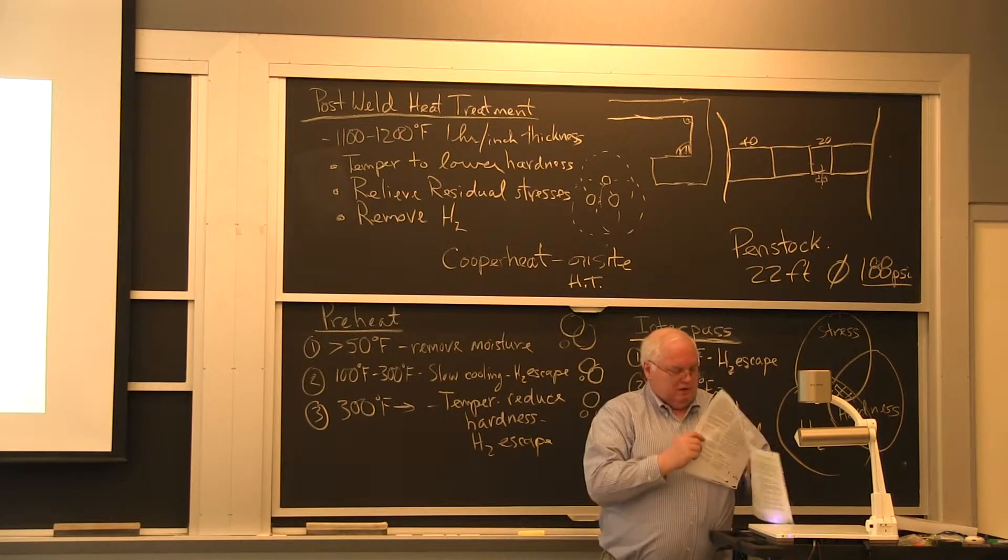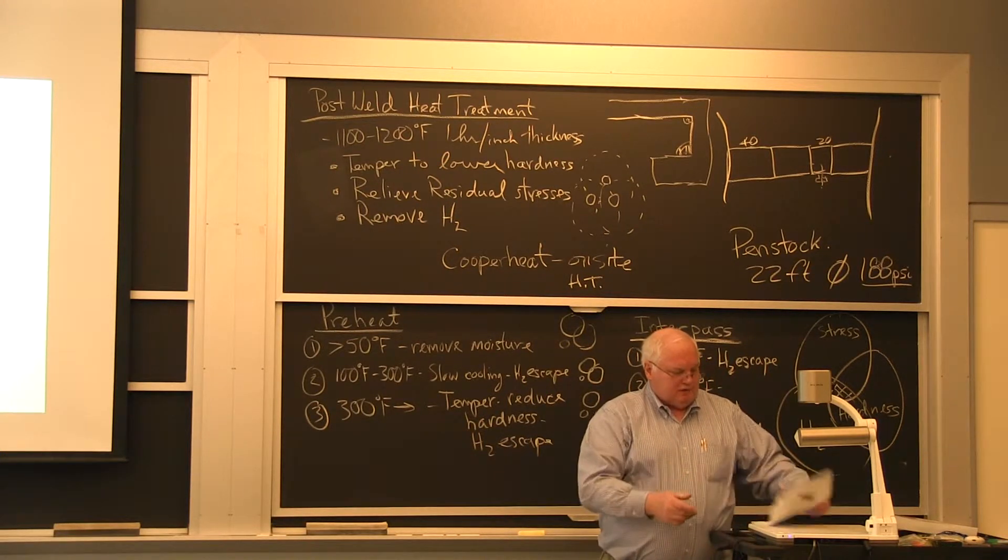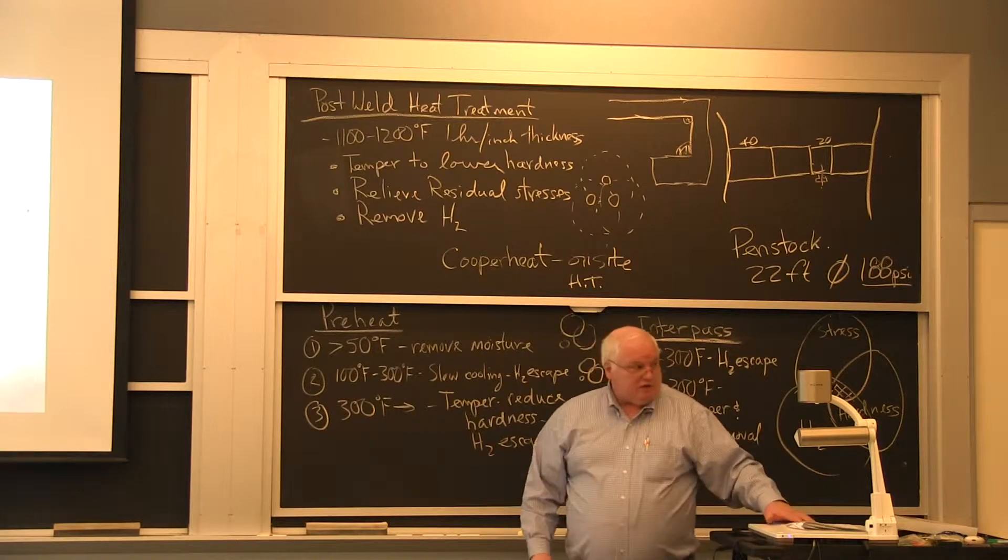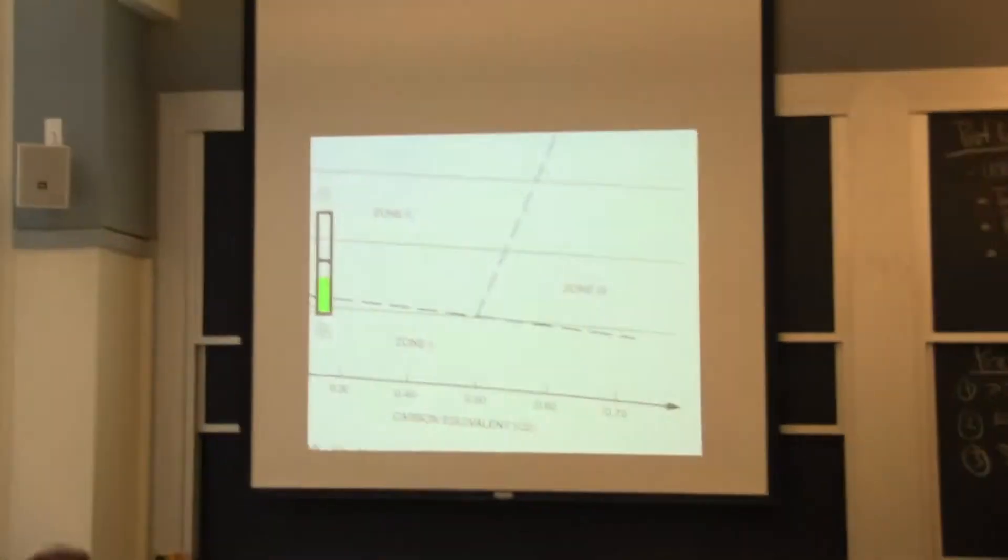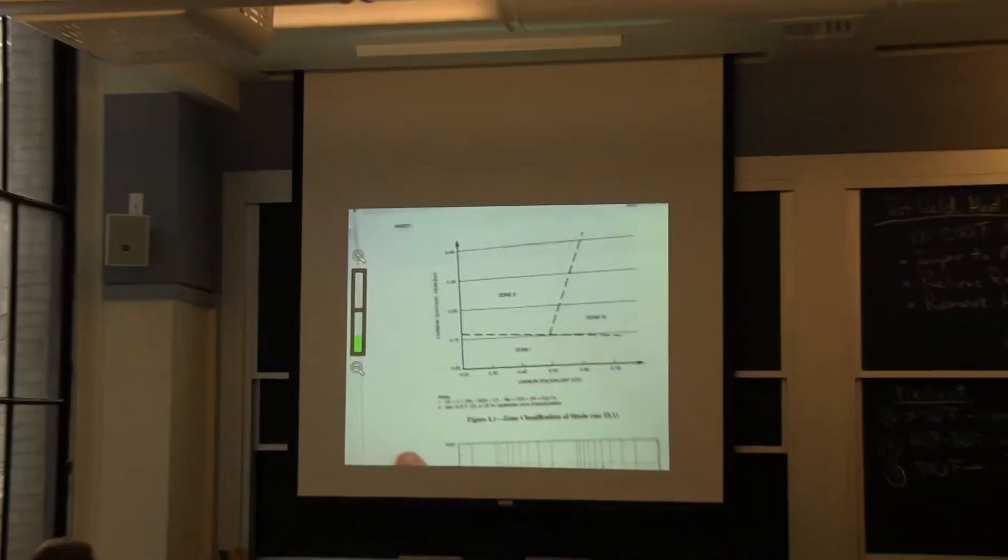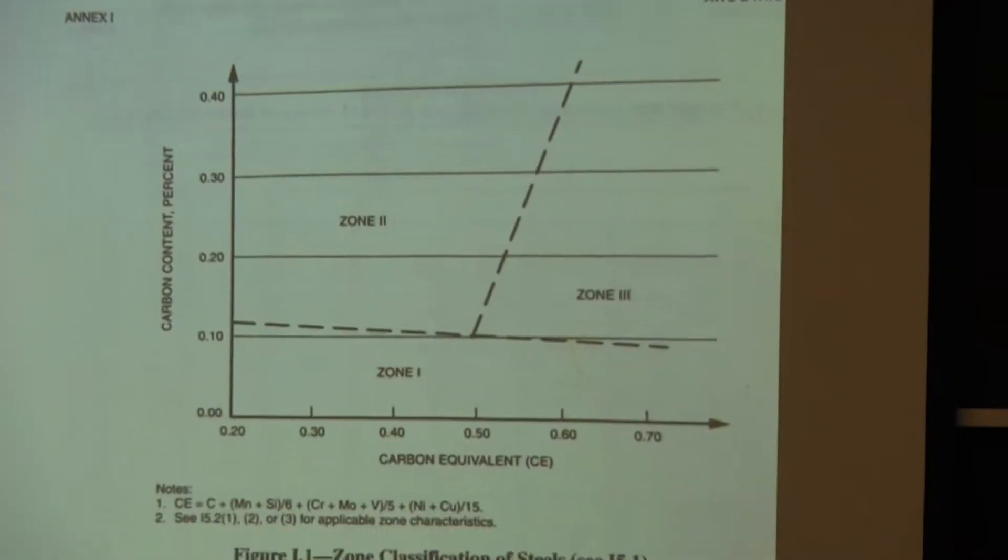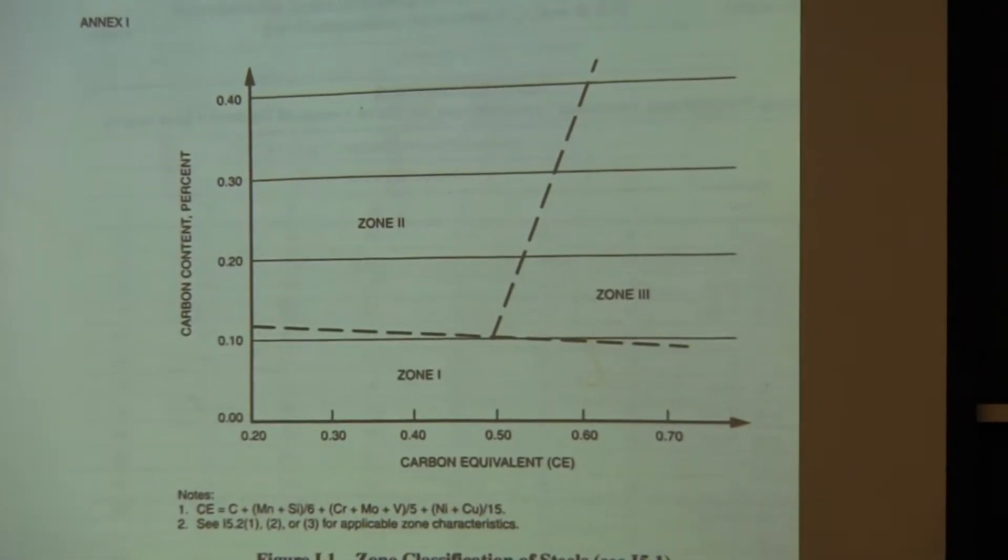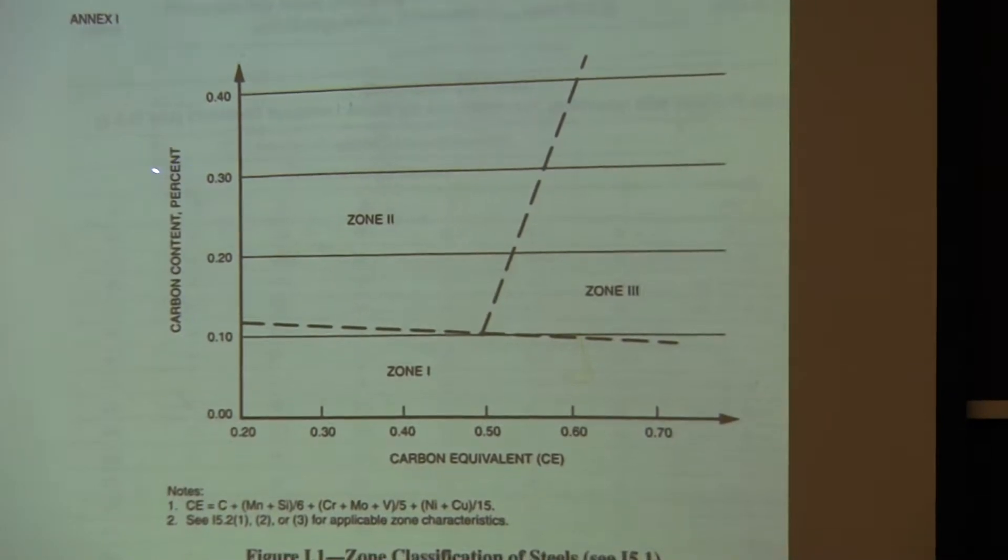Believe me, if you don't have someone to take you through this the first time, it's a mess trying to figure this out. I spent the first time I ever looked at this, it took me about two hours to figure out what they were saying and I had some background. So here's the carbon content and here's the carbon equivalent. I'm going to plot the two and I can be in zone one, I can be in zone two, or I can be in zone three. Zone one is carbon steel, it's easy to weld, okay?